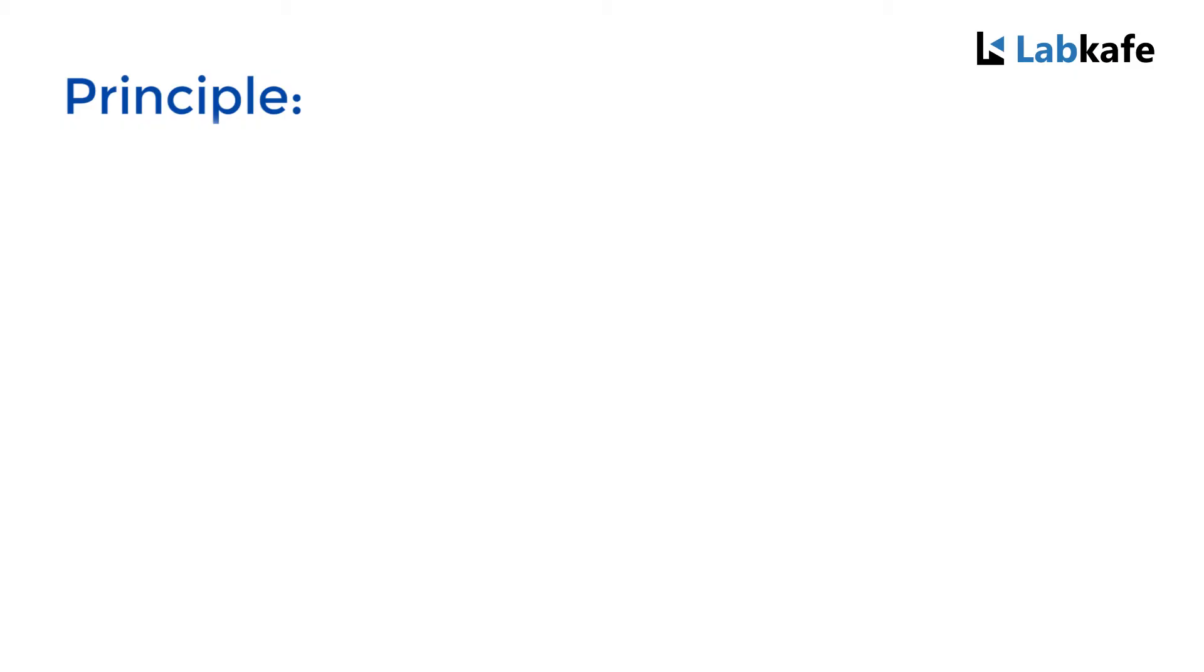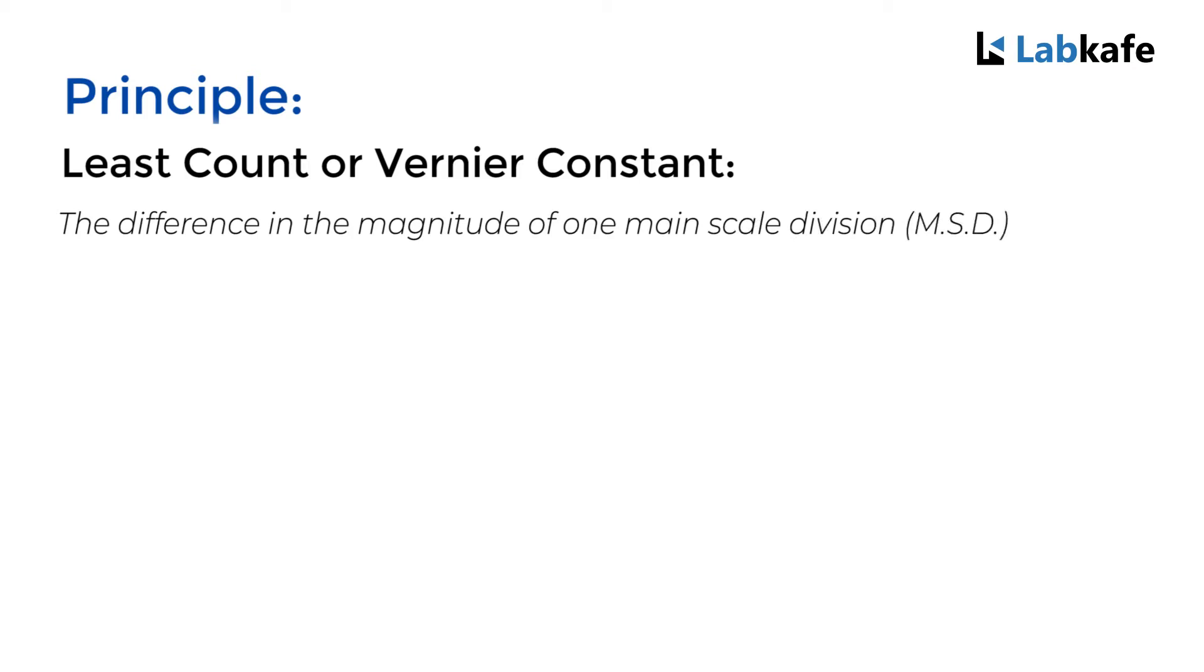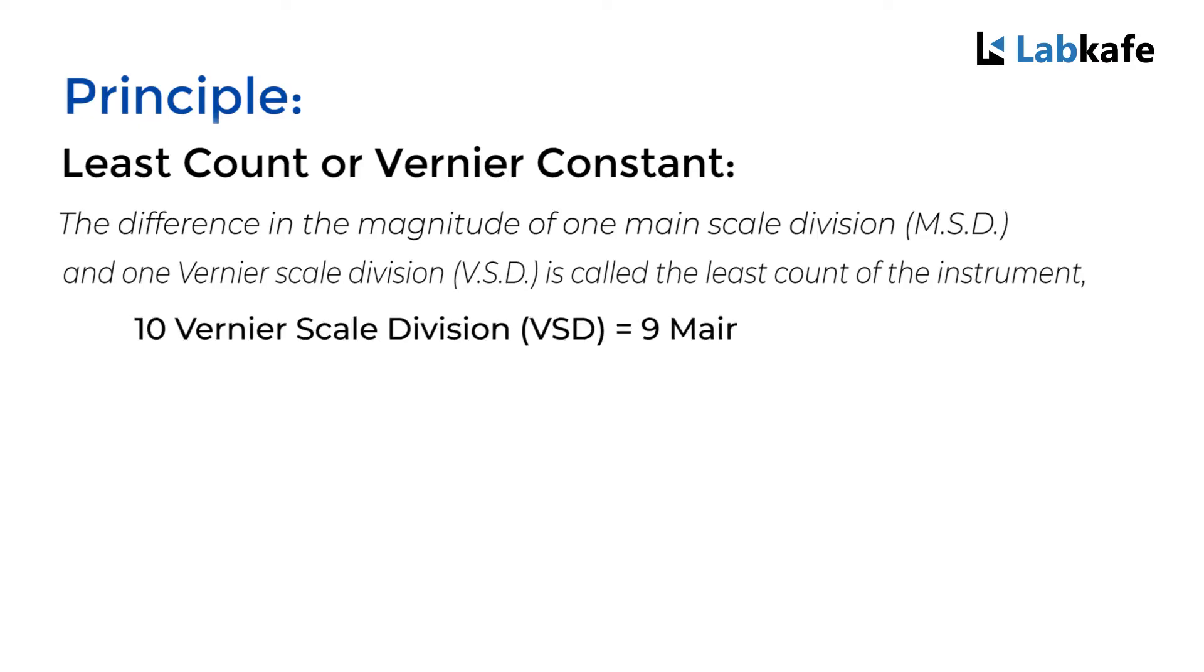Principle: First we will find the least count of a vernier caliper. The difference in magnitude of one main scale division and one vernier scale division is called least count. In our case, 10 vernier scale divisions equals 9 main scale divisions.